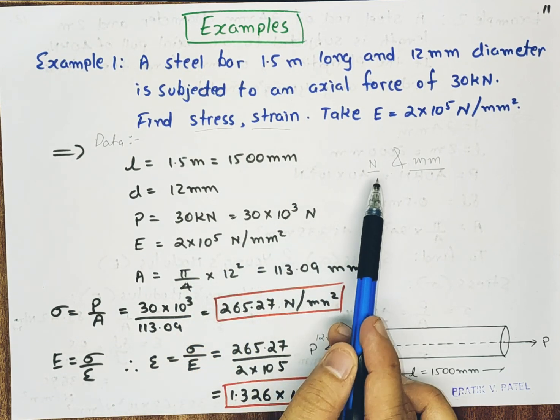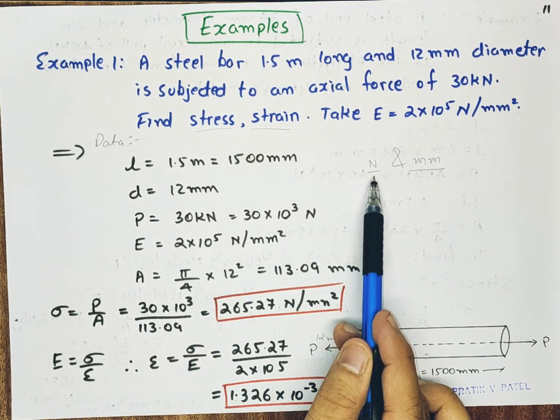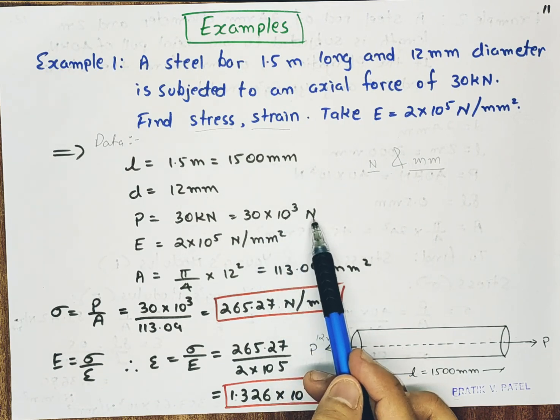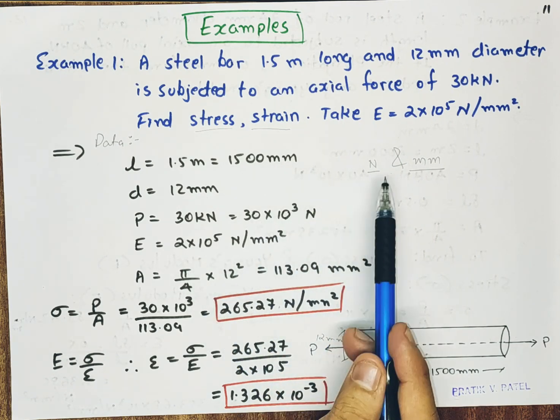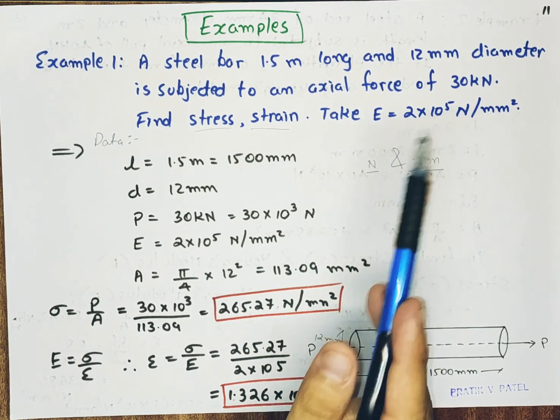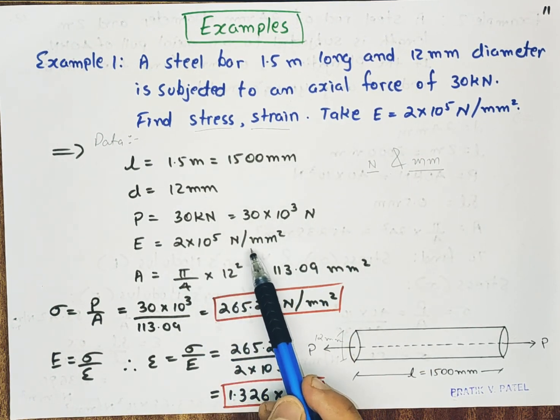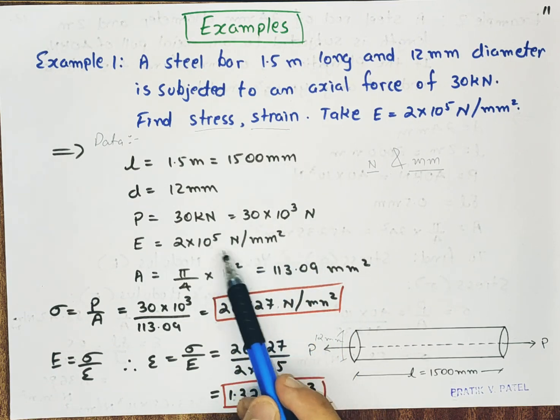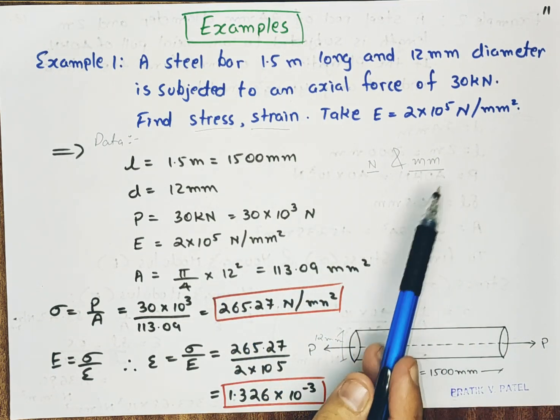And value of E is given 2 into 10 raised to 5 newton per mm square. It is already newton per mm square. So we don't have to convert it.